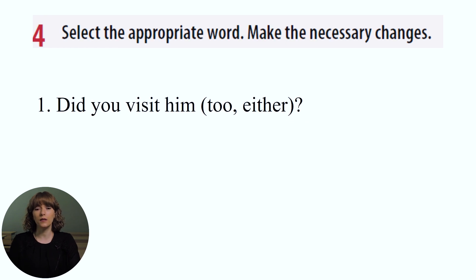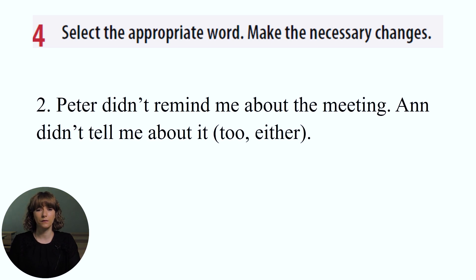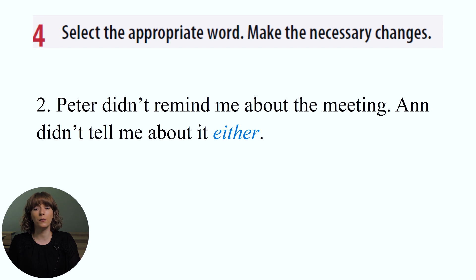Exercise four suggests that you select the appropriate word from the brackets. 'Did you visit him too?' 'Too' is used in a positive statement, whereas 'either' is used in negative ones. Be attentive here. 'Peter didn't remind me about the meeting. Ann didn't tell me about it either.' Here we have a negative statement.